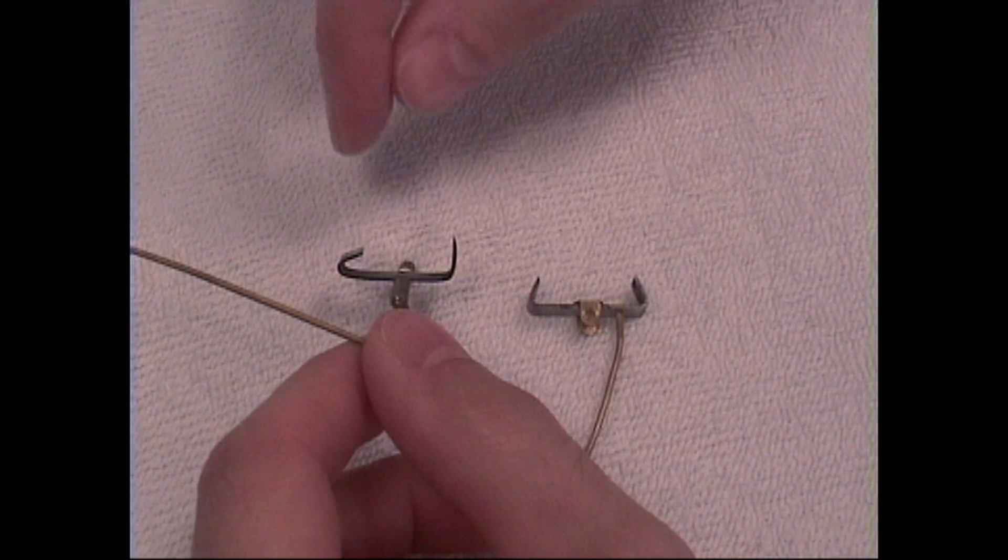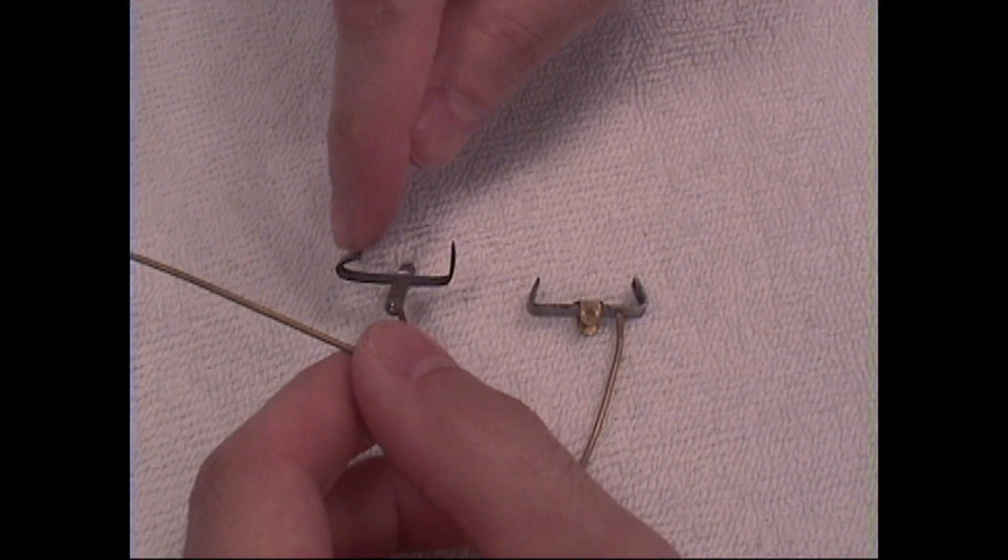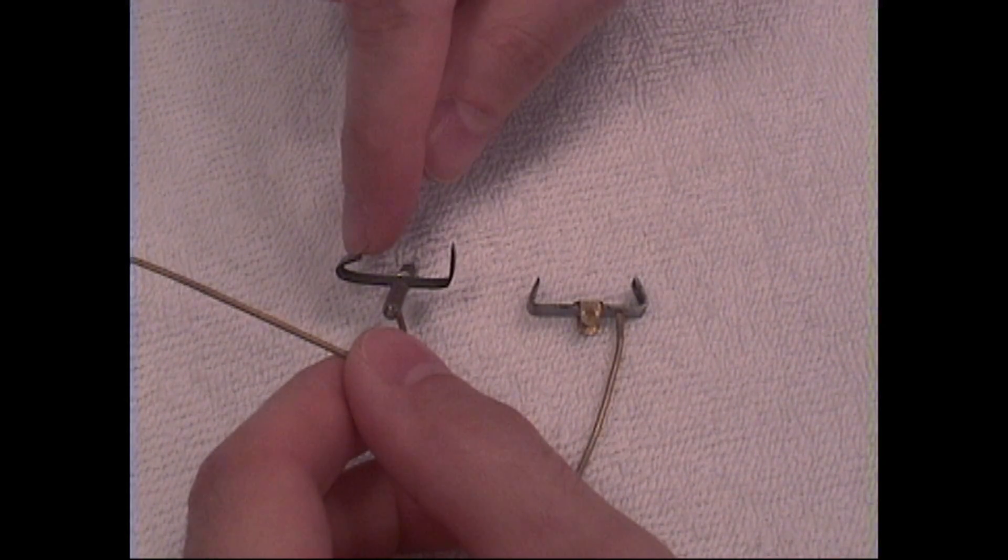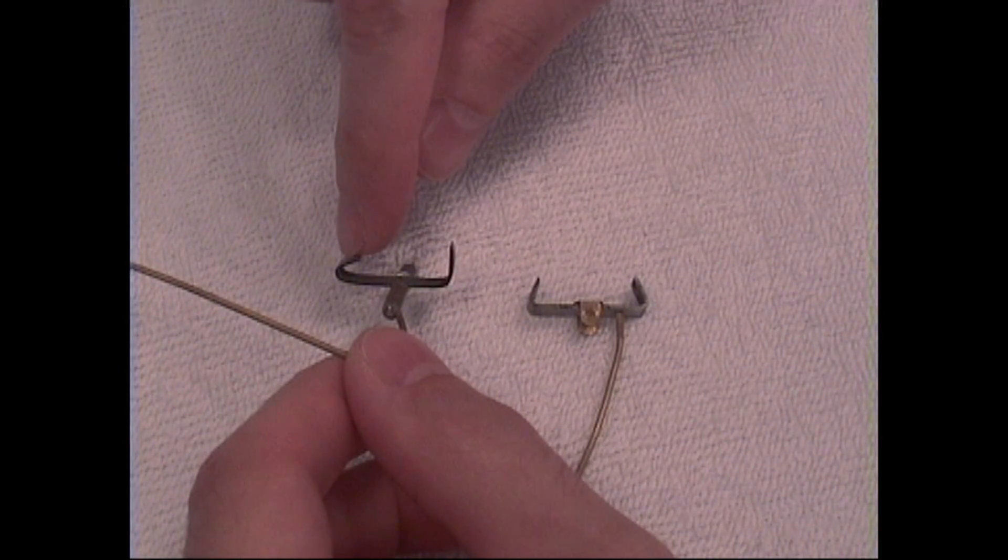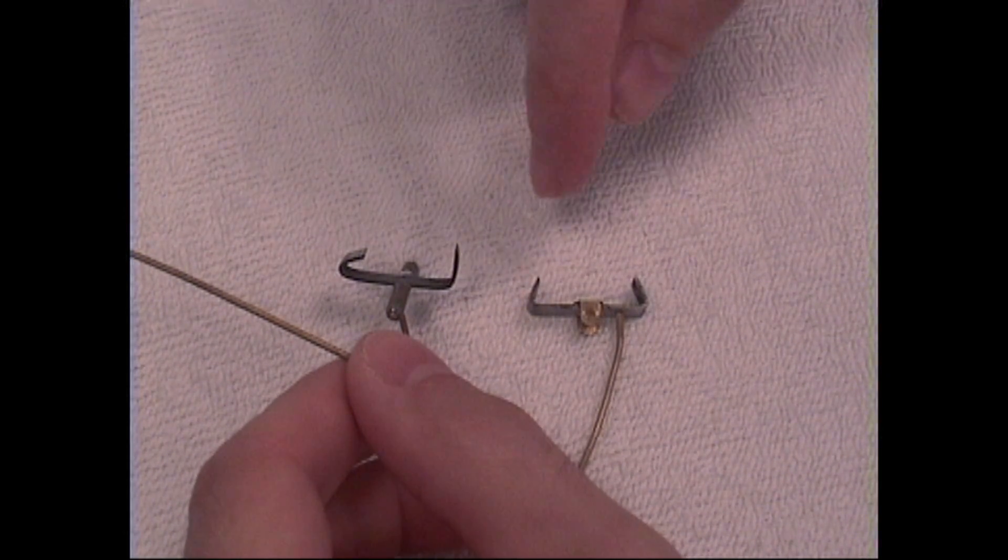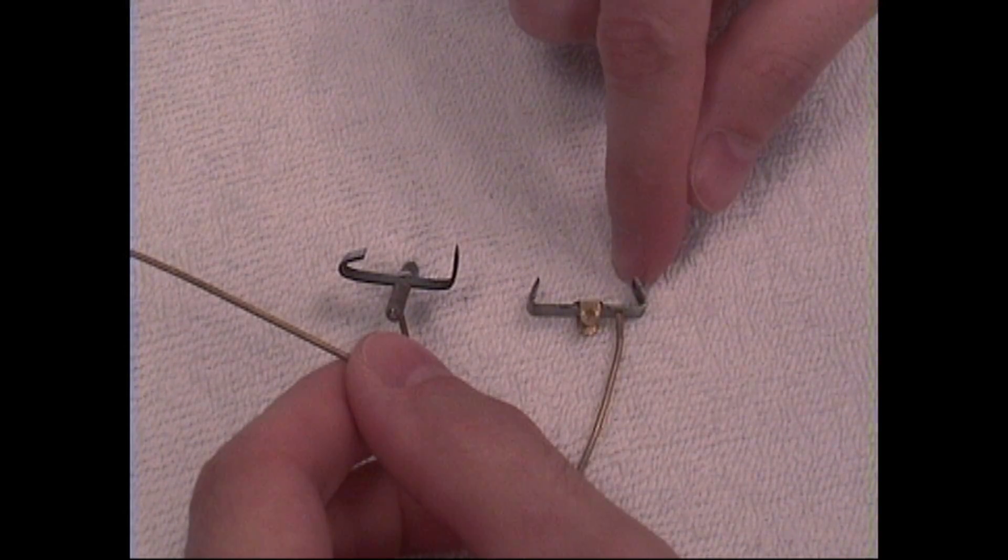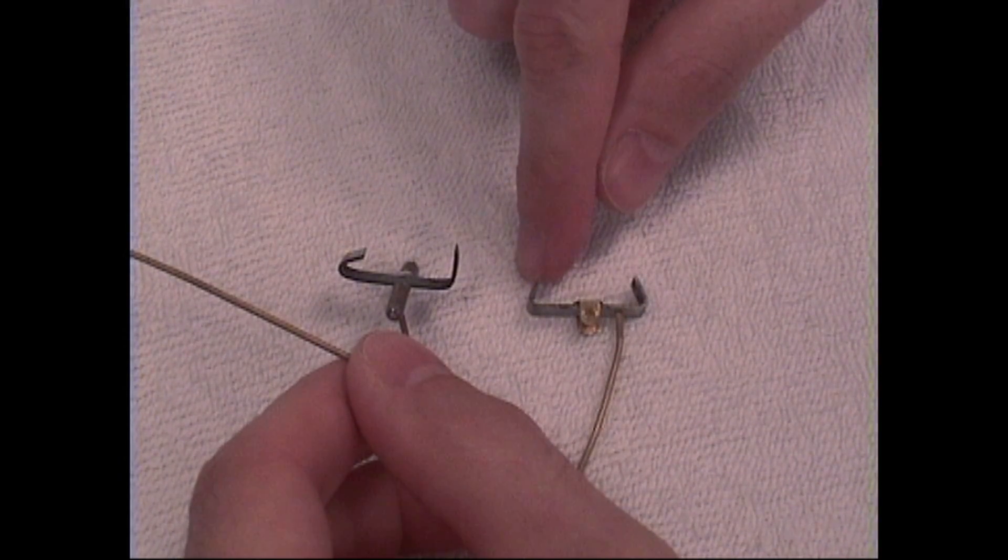Now another interesting point about these is that this left pallet here is the actual entry pallet or where the teeth initially enter into the verge and exit on this side. Whereas it's the opposite on our deadbeat. They enter here, the first tooth enters here and exit out this side.